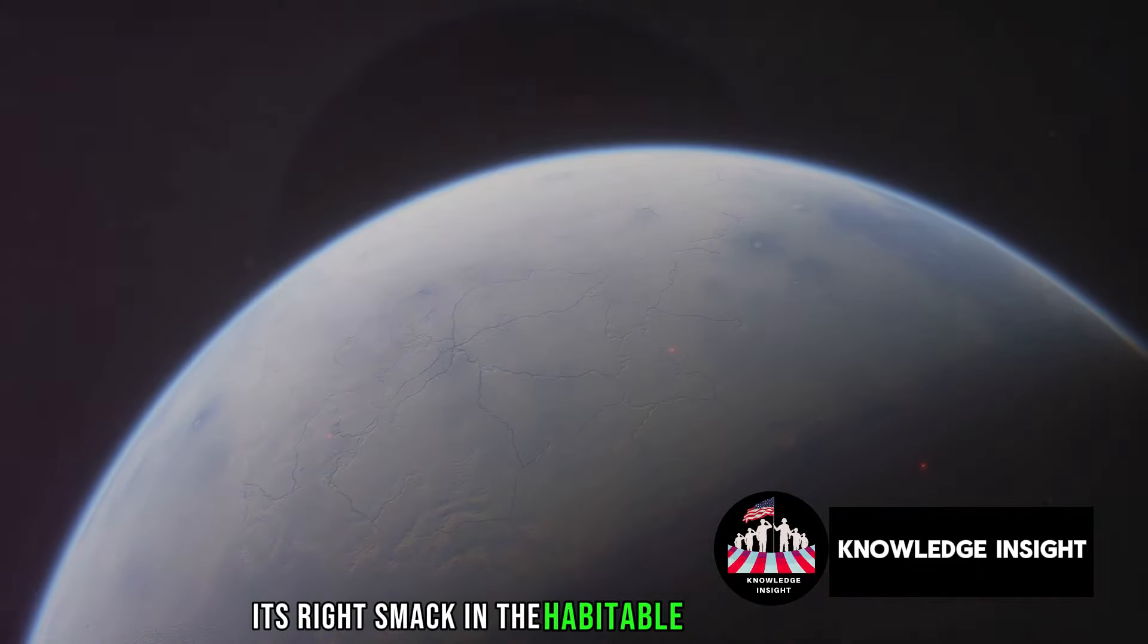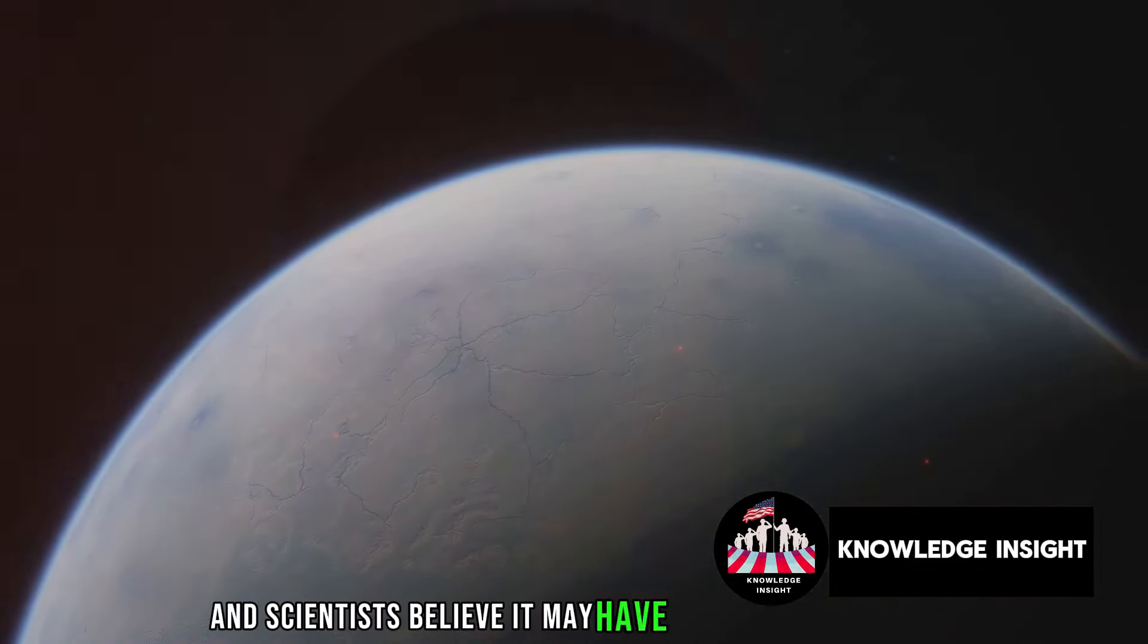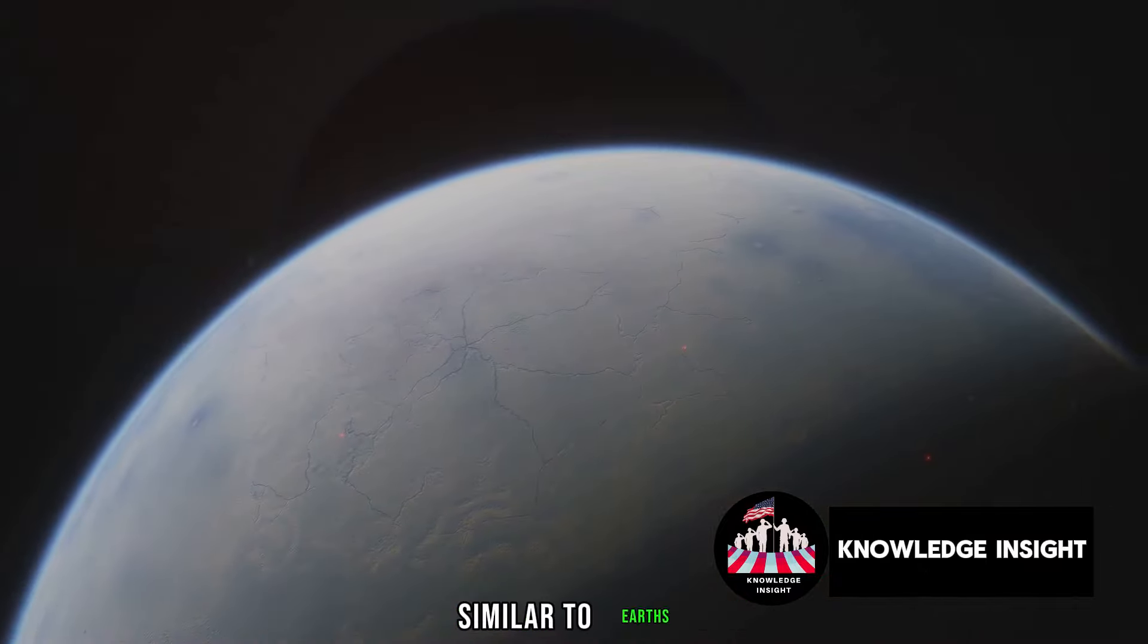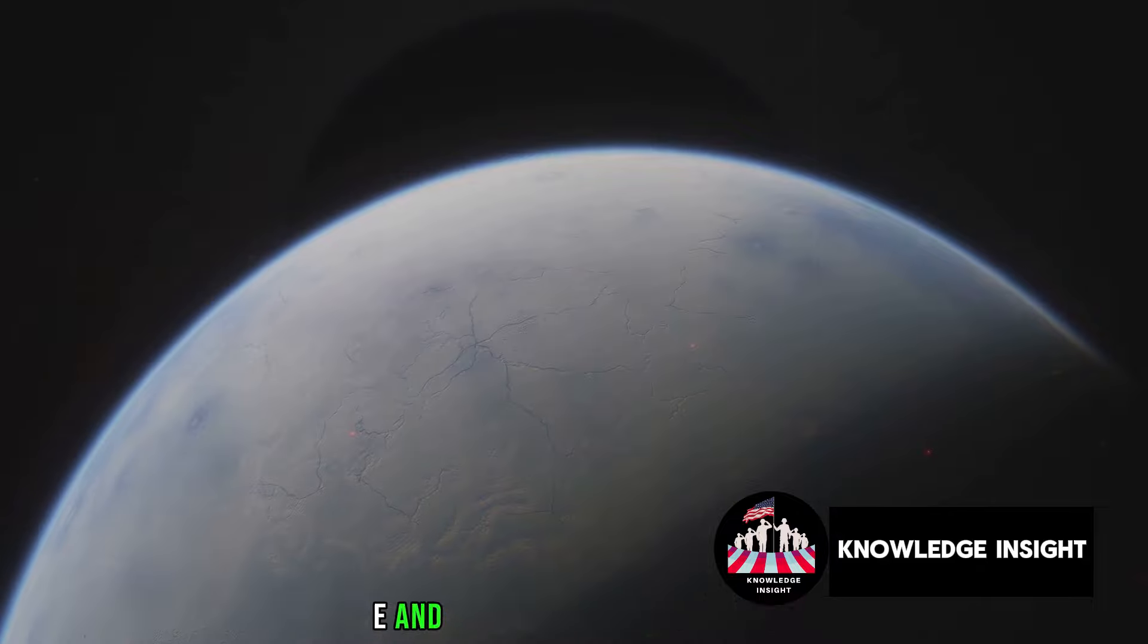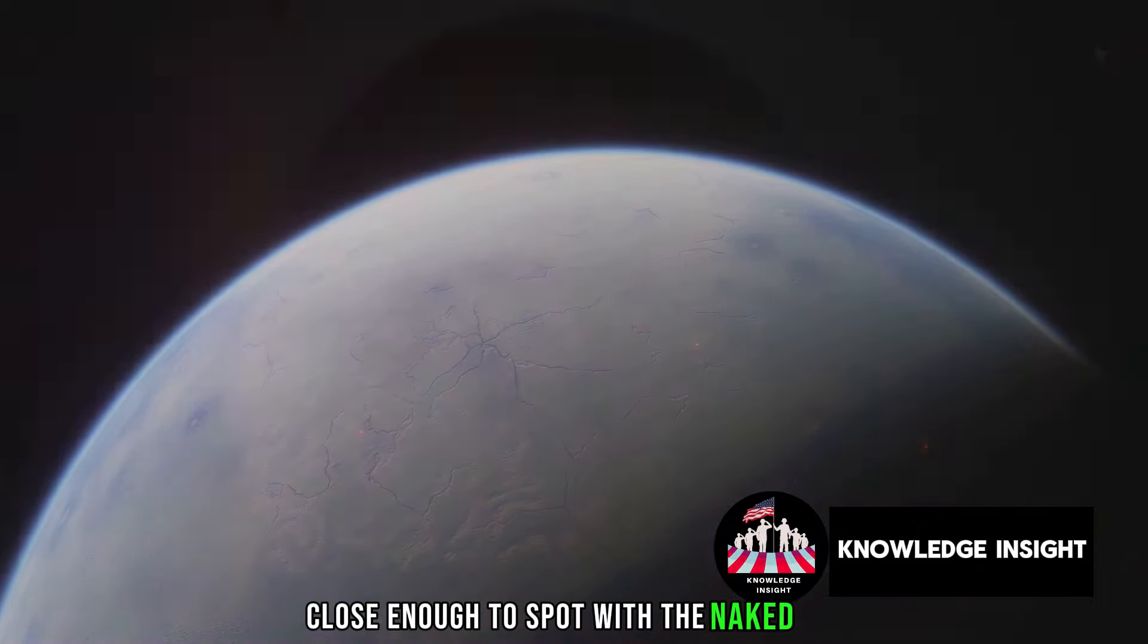It's right smack in the habitable zone of its star, and scientists believe it may have a rocky composition similar to Earth's. Imagine looking up at the sky from Trappist-1e and seeing six other planets close enough to spot with the naked eye.